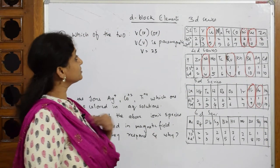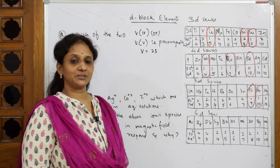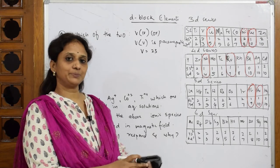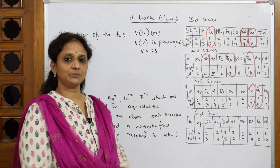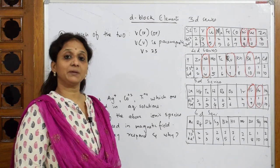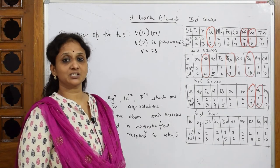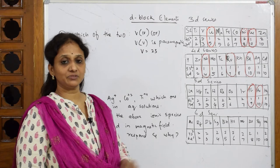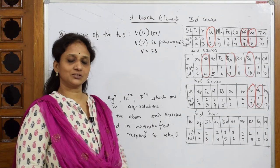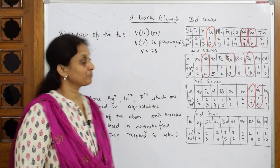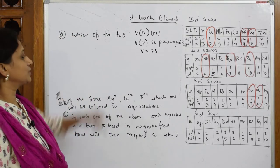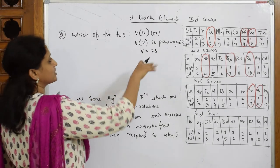Let us come back and solve this question. I'm trying to do different variations: comparing ionization enthalpy with electronic configuration, color property with electronic configuration, and paramagnetic or diamagnetic behavior with configuration. Let us see how we can relate all these so that all question types are covered.